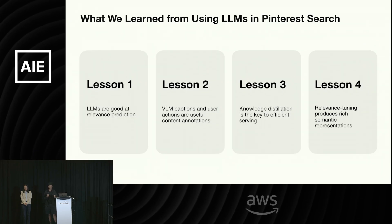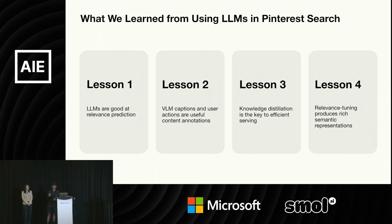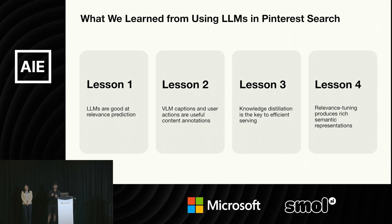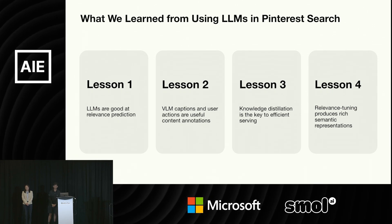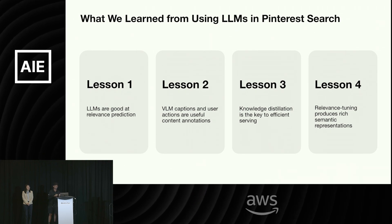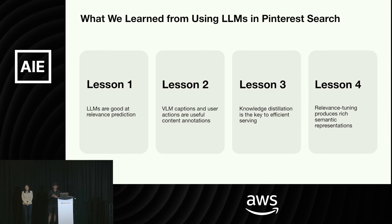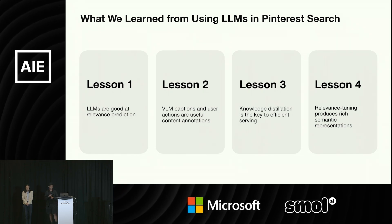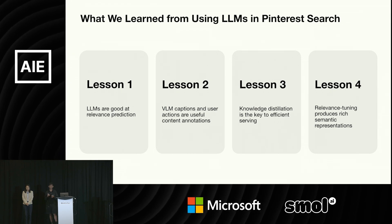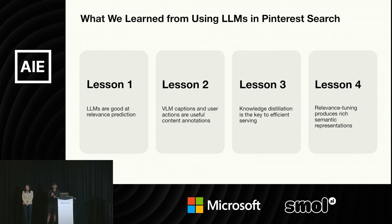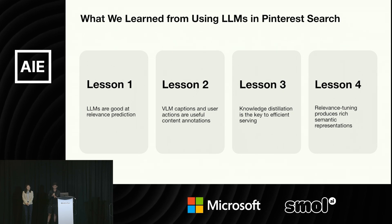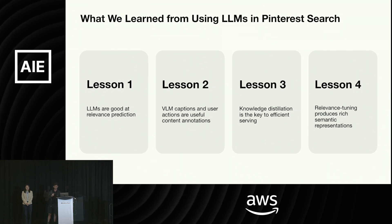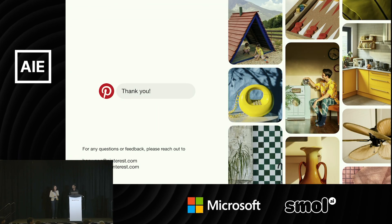Let me go over the key takeaways. Lesson one: LLMs are really good at relevance prediction. Lesson two: visual language model captions are good ways to imbue models with image representations, and user actions are very good content annotations. Lesson three: knowledge distillation is a very good way to scale and efficiently serve models online. And lesson four: relevance tuning produces rich representations that embed semantic representations for content really well. Thank you. We welcome any questions from our audience.